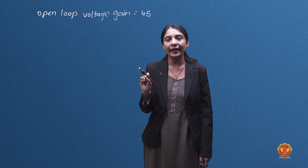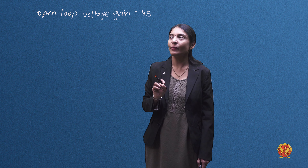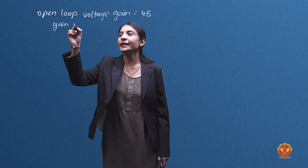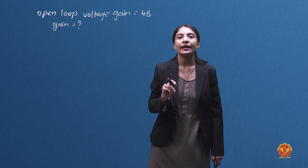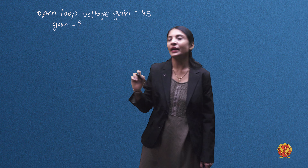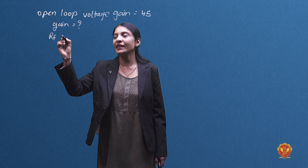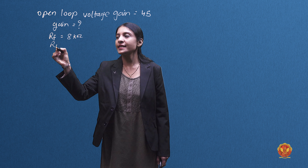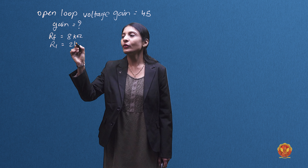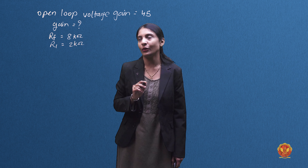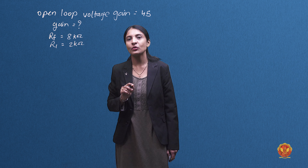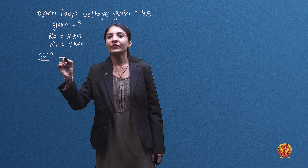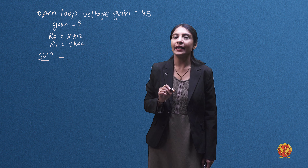So the gain of the amplifier — we have to calculate the gain of the amplifier here. The feedback resistance given is 8 kohm and the input resistance given is 2 kohm. Let's see the solution.